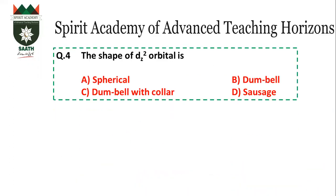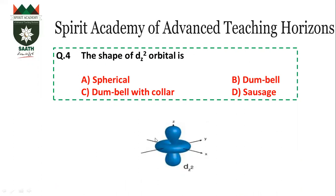Similarly, the shape of the DZ² orbital — DZ² orbital has a dumbbell shape with a collar (torus ring). So it is dumbbell shaped with a collar. The answer is C.